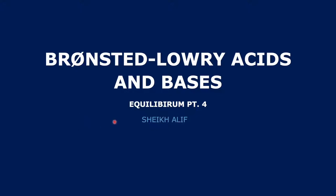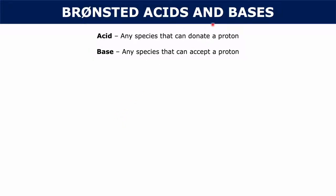Under the Brønsted acid and base model, an acid is any species that can donate a proton, and a base is any species that can accept a proton. An example would be sulfuric acid, H2SO4, and ammonia. The ammonia is the base, the sulfuric acid is the acid, and they react to produce the sulfate ion and the ammonium ion.